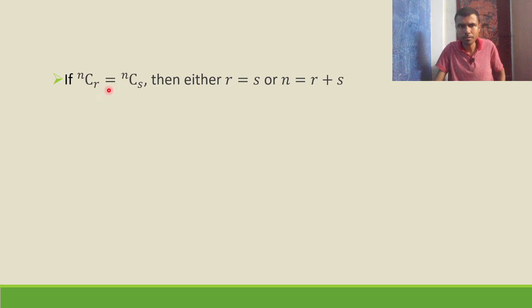This is something you can remember. Whenever nCr = nCs, either r = s or n = r + s, that means r + s = n.